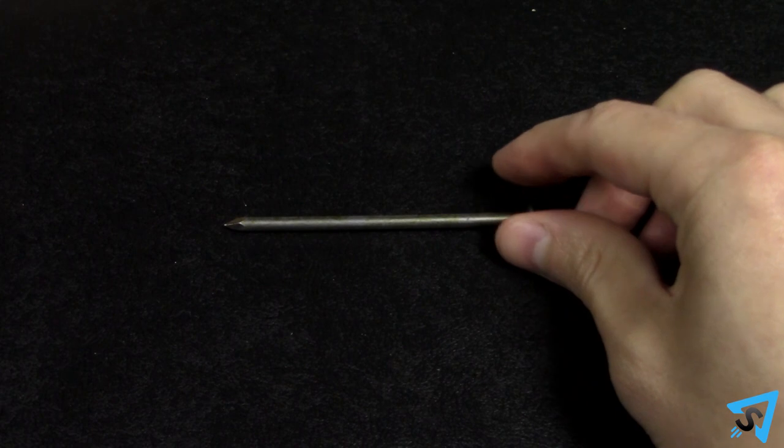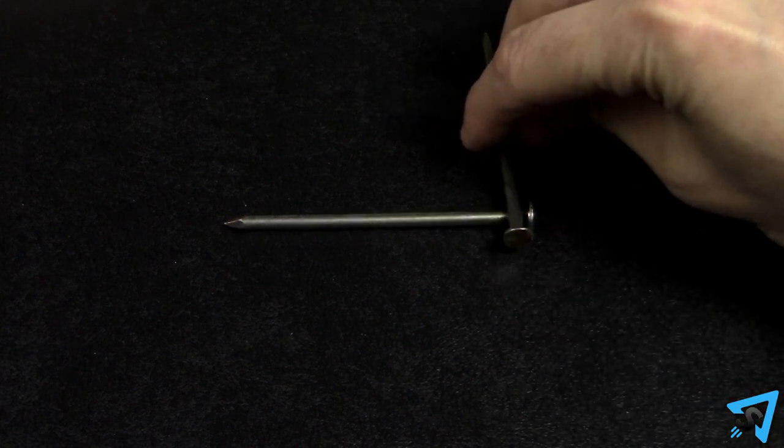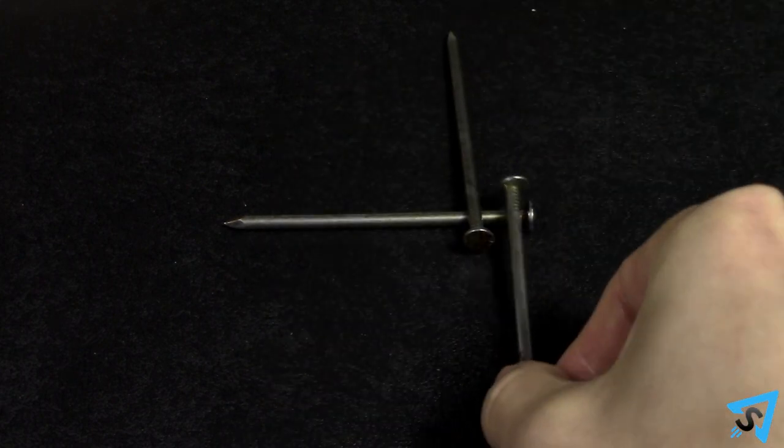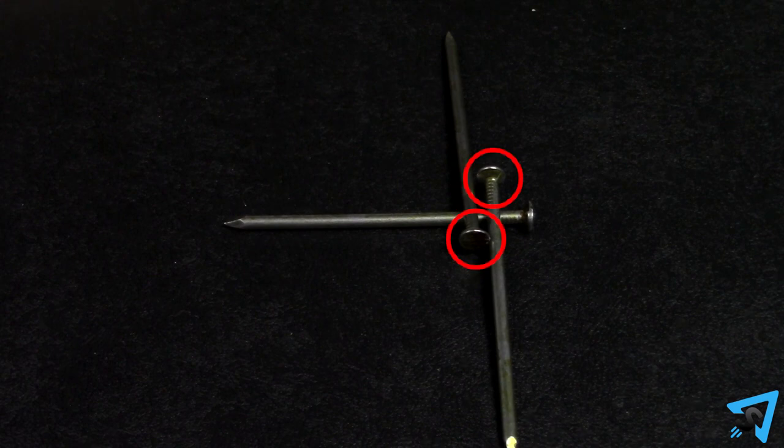Lay one nail on the table. Rest two nails perpendicular to the first nail in opposite directions so the striking end of the nails overlap the first nail.